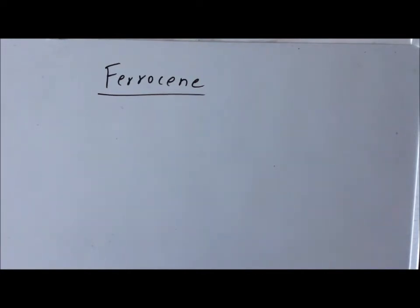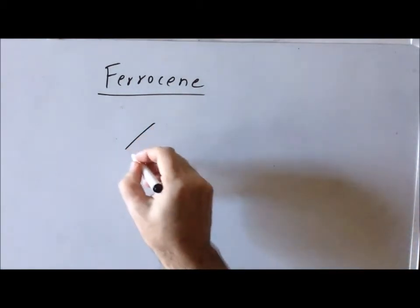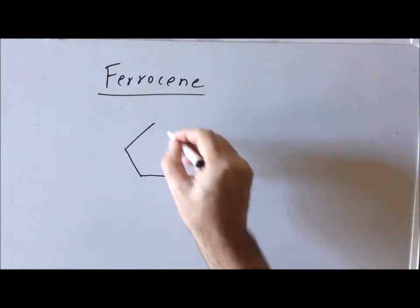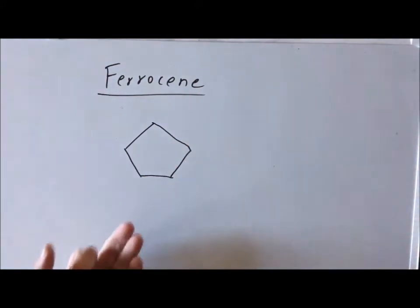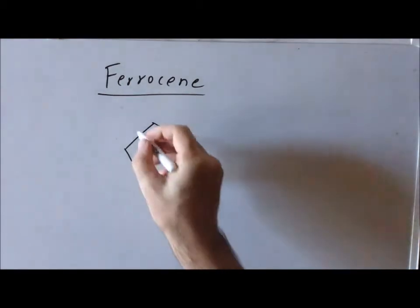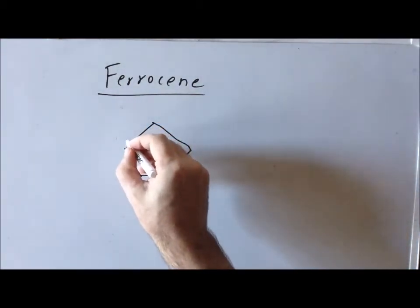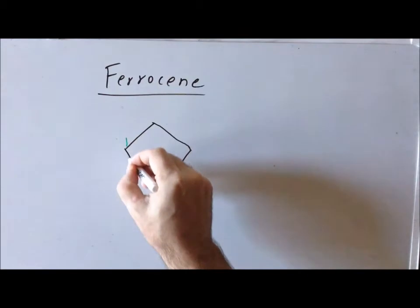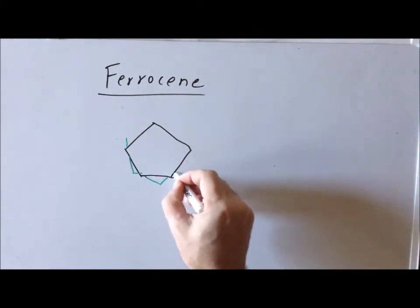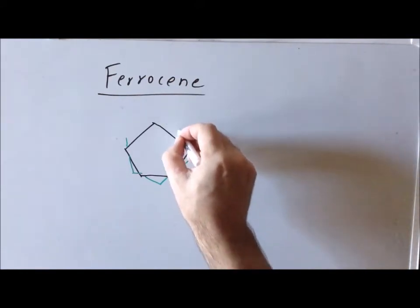The third conformation of ferrocene that we want to investigate is the so-called random conformation. For all the conformations that we've drawn so far, we've denoted the top CP ring in black to represent a ring that is closer to us than the plane of the board, and we've been drawing the second ring in green to show the ring that is behind the plane of the board.